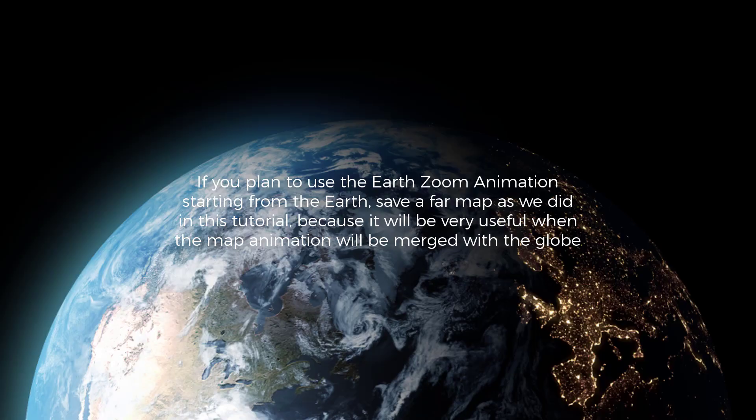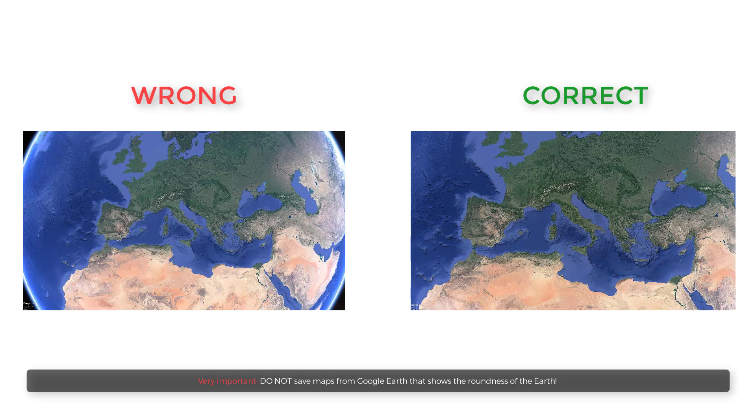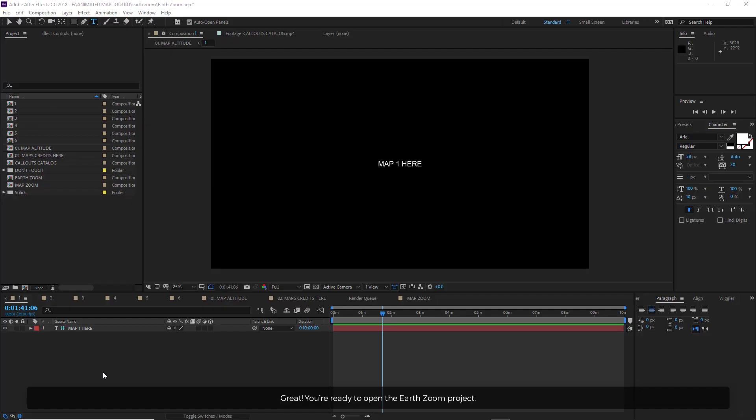Another useful piece of advice: if you plan to use the Earth Zoom animation starting from the Earth, save a far map as we did in this tutorial, because it will be very useful when the map animation is merged with the globe. And very important — do NOT save maps from Google Earth that show the roundness of the Earth.